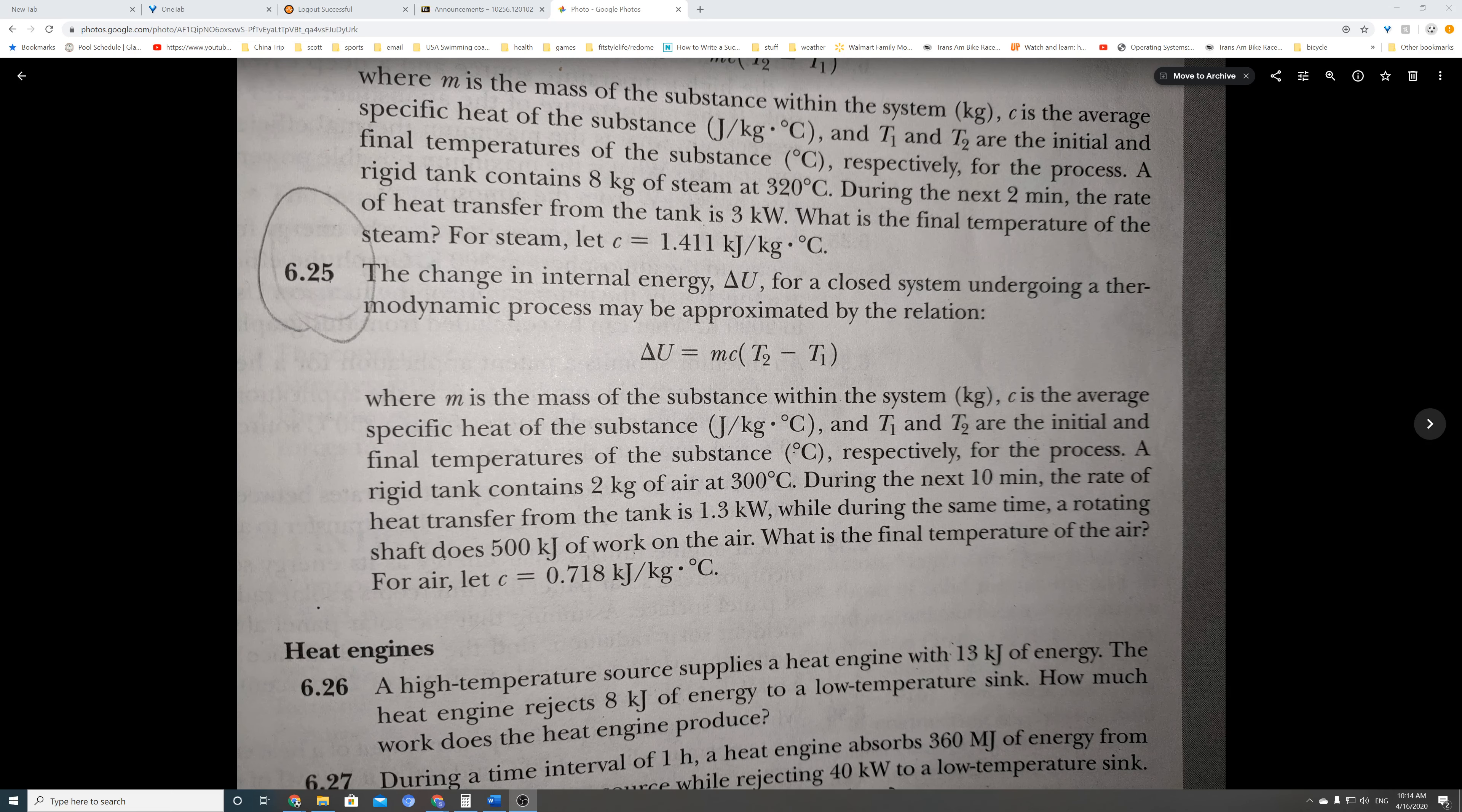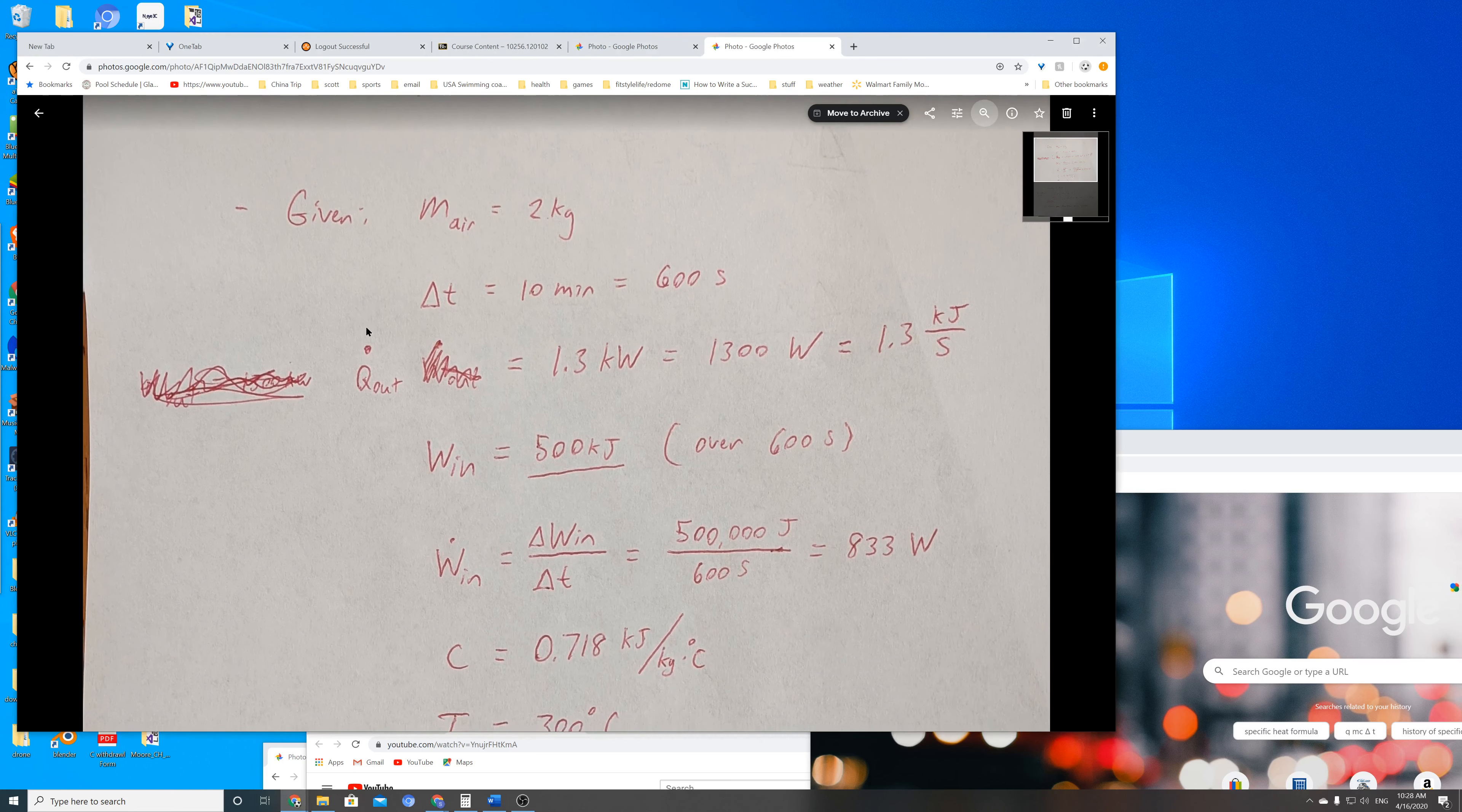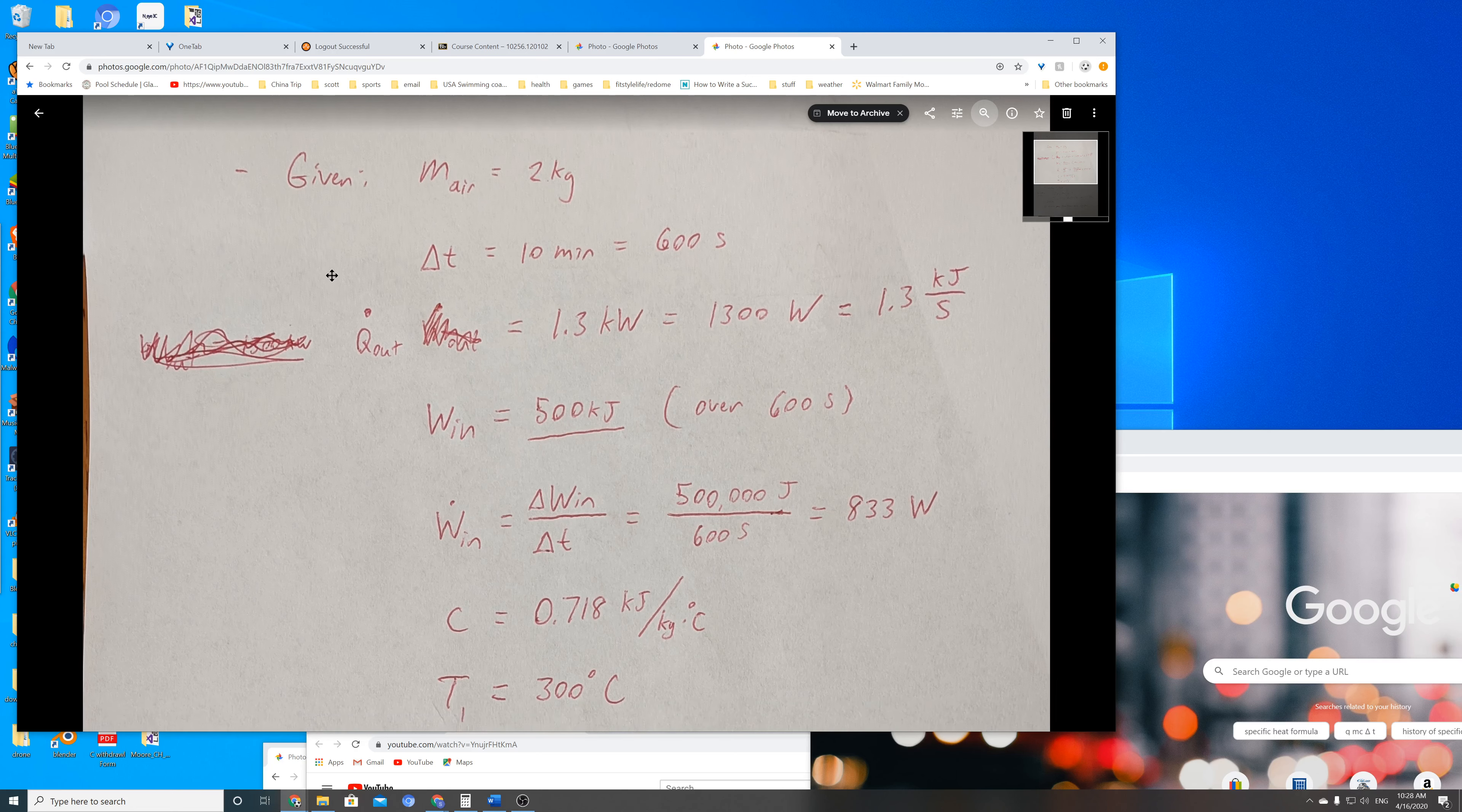Continuing on with 6.25, we're looking to find that final temperature of the air in the system. Some of the given quantities: we have a mass of air which is two kilograms. Mass is not changing throughout. We're not exchanging mass with the outside because it's a closed system.